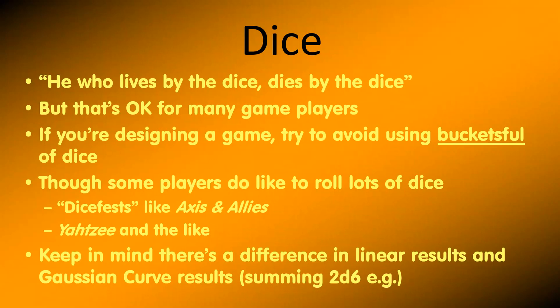Keep in mind, when you're using dice, there's a difference between linear results, where you usually roll one die, and a Gaussian curve result, for example when you sum 2d6. I've talked about that at greater length in other videos.